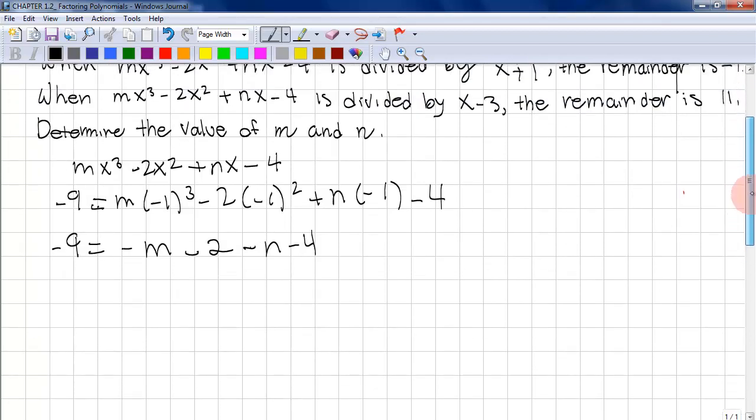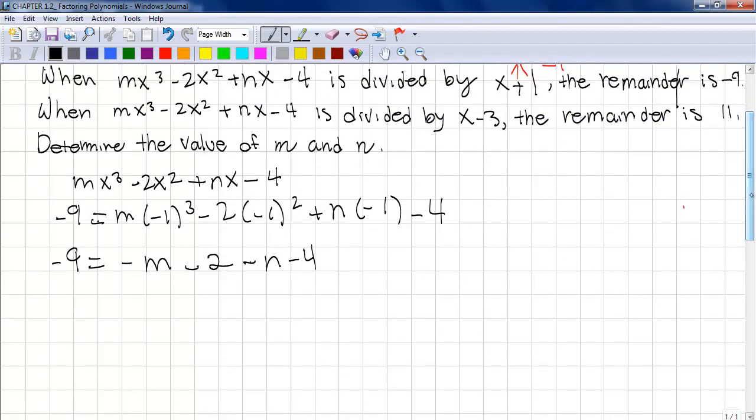We're going to leave that equation. We're going to come back to it later. We're going to work on the next equation now. Again, we have mx³ - 2x² + nx - 4. This time our remainder is 11 and it's divided by x-3. So we know for x's, we can substitute it by 3.